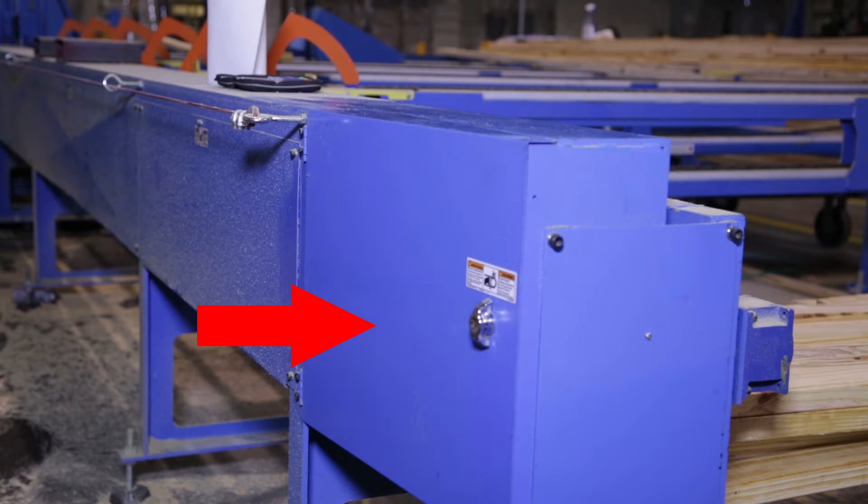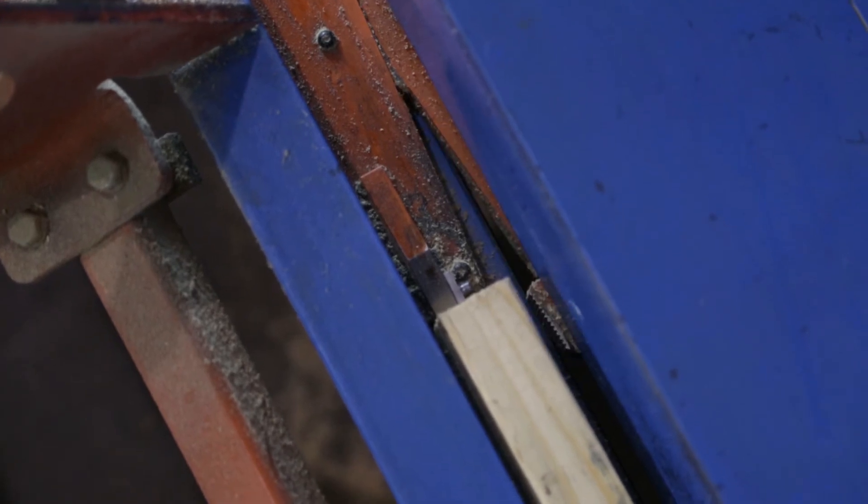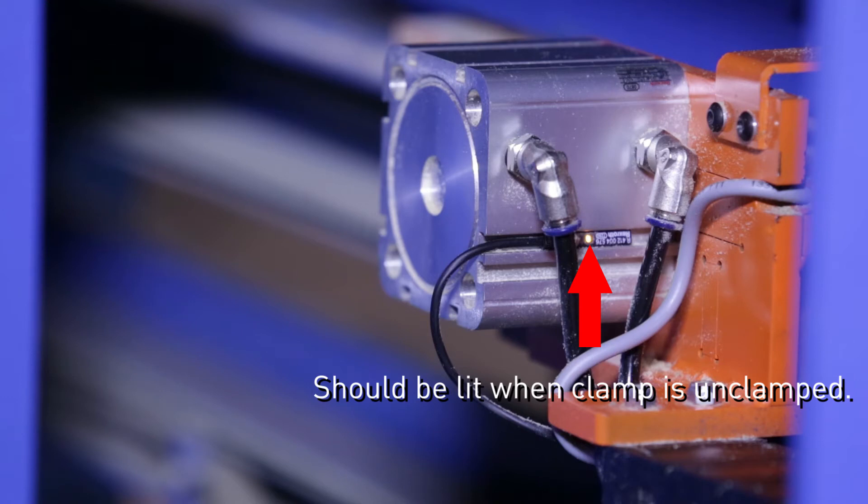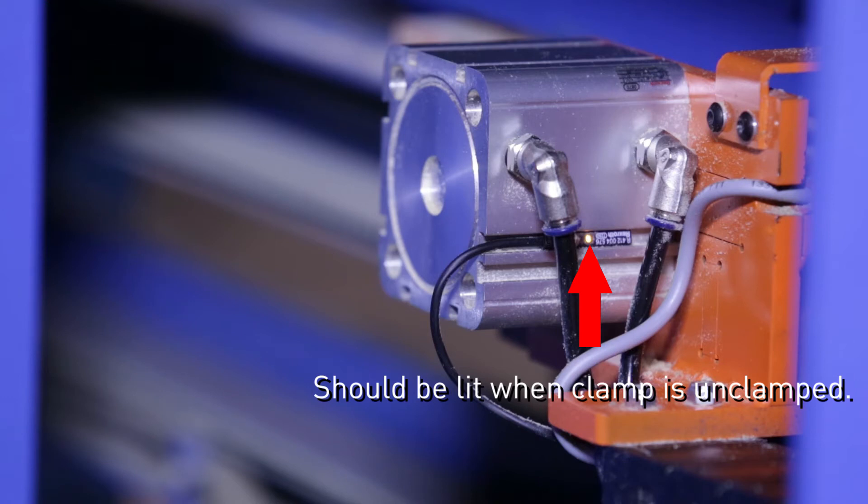The gripper clamp sensor is mounted to the gripper cylinder. To access the cylinder from the hinged guard door on the end of the in-feed rail, move the gripper to its maximum position. Unclamp the gripper. A second person can watch the light on the gripper clamp sensor itself. It should light up and stay lit when the gripper is unclamped.